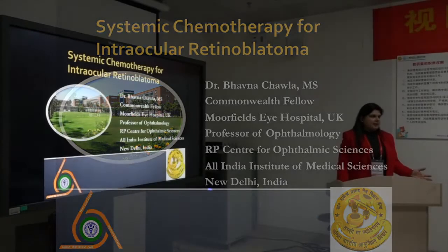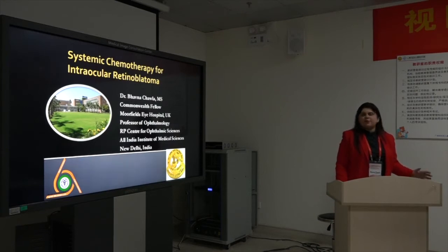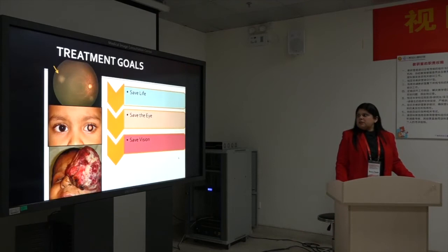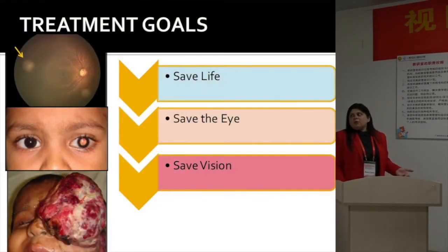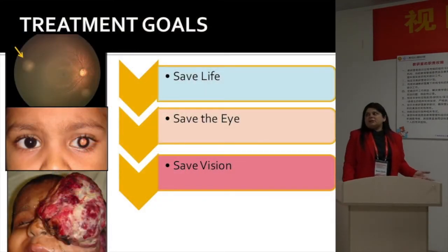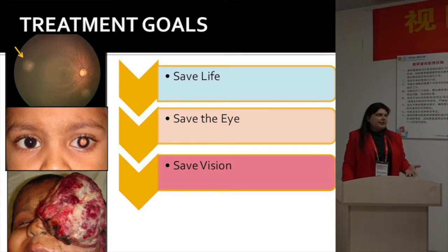What we do in India at our center from an ophthalmologist perspective. Systemic chemotherapy for intraocular retinoblastoma. The treatment goals for retinoblastoma include saving life, saving the eye, and saving vision as far as possible, in that order.